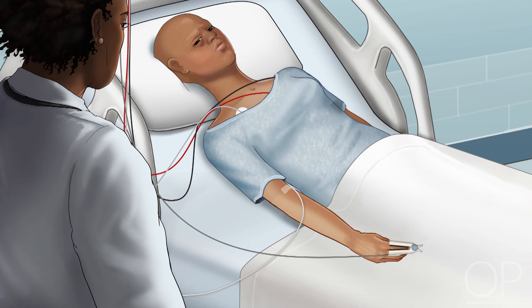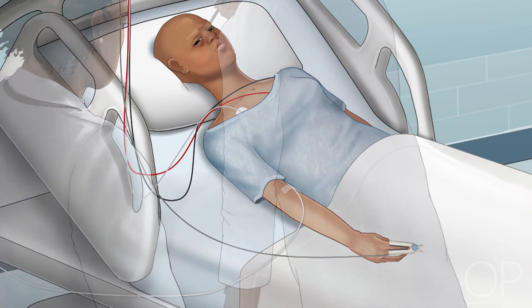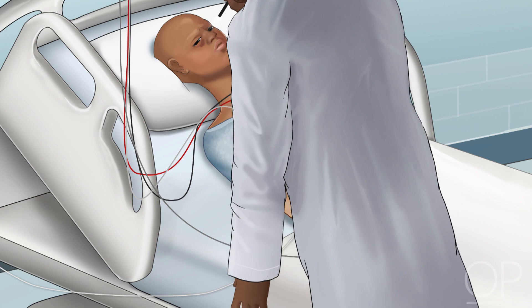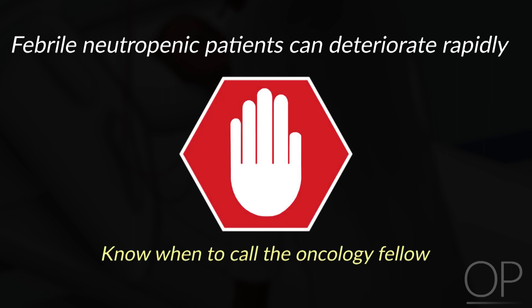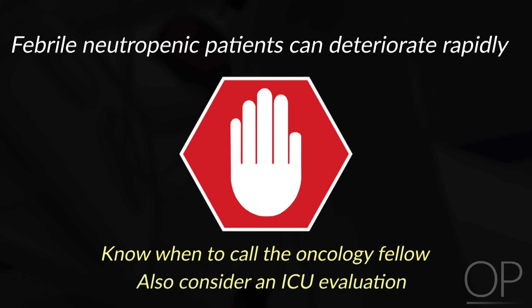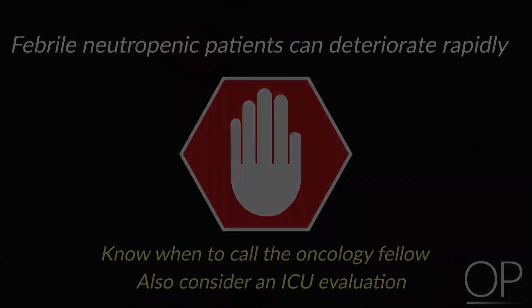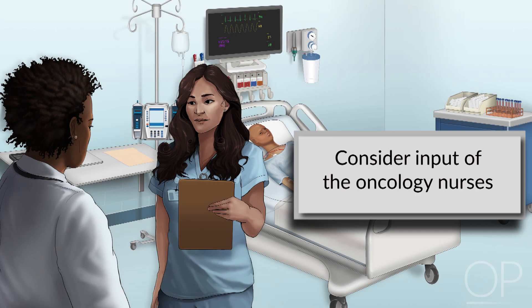In patients with headaches or other neurological symptoms, always do a brief neurological exam and assess mental status. Because febrile patients with neutropenia can get sick so rapidly, one very important thing is to know when to call for help. You should always feel comfortable contacting the oncology fellow. He or she will probably want to know about all fevers anyway, but certainly call or page your fellow if you're ever worried about a patient's clinical status. Also consider an ICU evaluation for a patient you're worried about. Finally, carefully consider the input of the oncology nurses — if they're worried about a patient, you should be too.